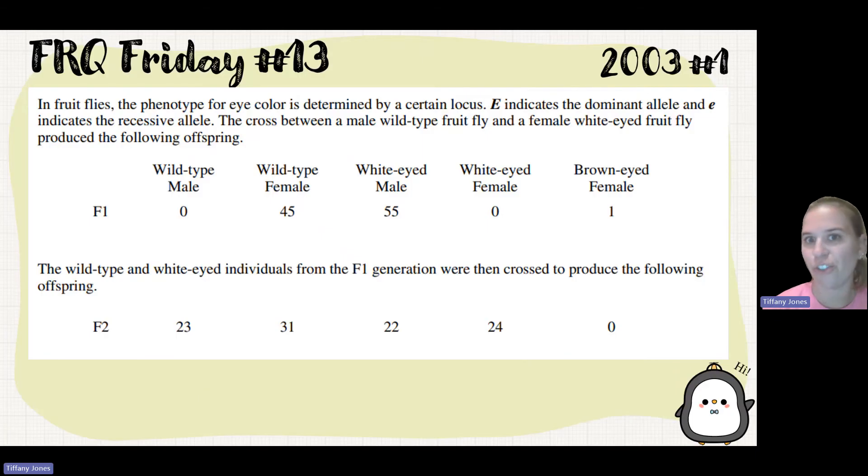So here we're told that there's a phenotype of eye color determined by a certain locus, capital E, the dominant allele, lowercase e, the recessive allele. We cross a wild type male and a white eyed female and we end up with 45 wild type females and 55 white eyed males.